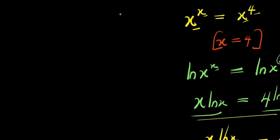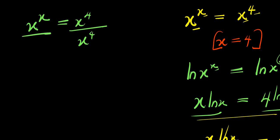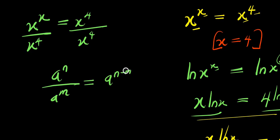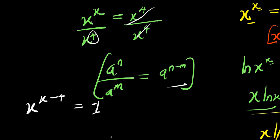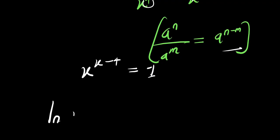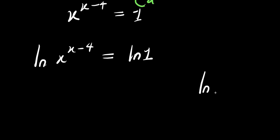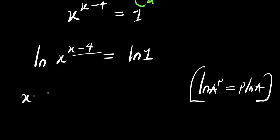We can also solve the equation x to the power of x equals x to the power of 4 using a different approach. Divide both sides by x to the power of 4. Using the identity a to the power of n divided by a to the power of m equals a to the power of n minus m, we get x to the power of (x minus 4) equals 1. Applying the natural log: the natural log of x to the power of (x minus 4) equals the natural log of 1, and using the log power rule, x minus 4 times natural log x equals natural log of 1.